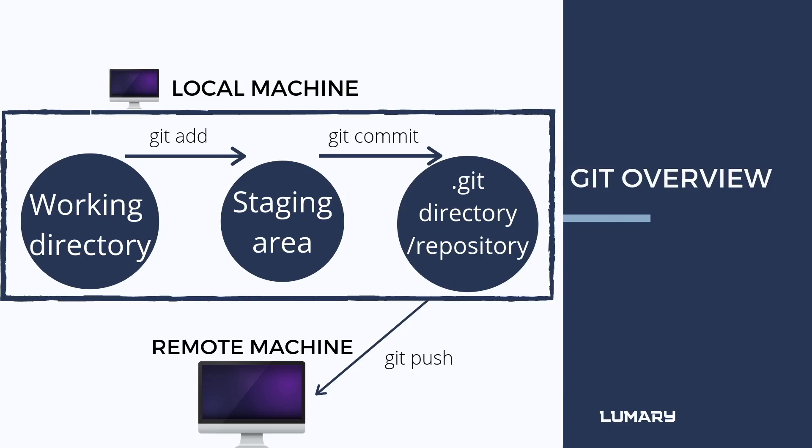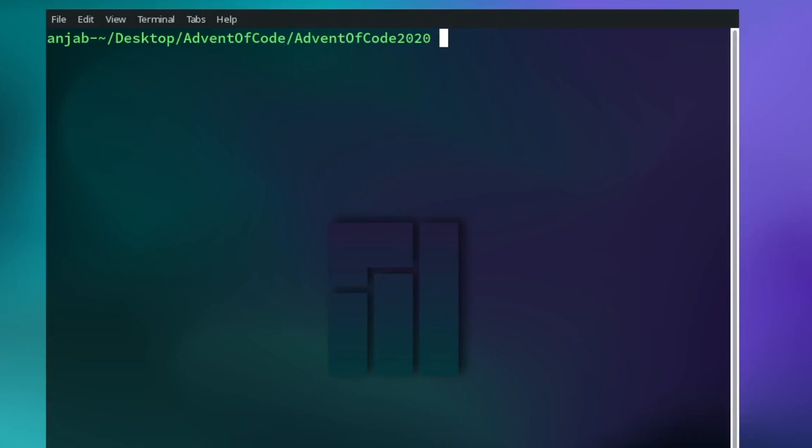You have your local machine with code on it, and then we have the staging area and the git directory. If you changed something in your code in your working directory, you can add it to the staging area with the command git add. Next you can commit it to the git directory with the command git commit. And finally, if you also have a remote repository, you can push your code from your working directory to the remote machine with the command git push.